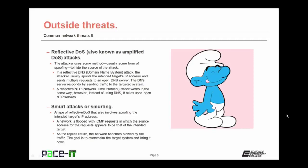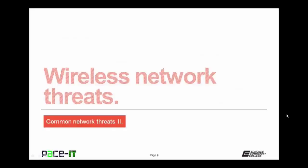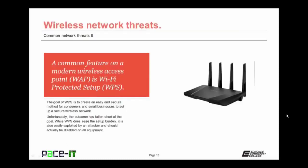It's time to move on to wireless network threats. A common feature on modern wireless access points is Wi-Fi Protected Setup, or WPS. The goal of WPS is to create an easy and secure method for consumers and small businesses to set up a secure wireless network. Unfortunately, the outcome has fallen short of the goal. While WPS does ease the setup burden, it is also easily exploited by an attacker and should actually be disabled on all equipment. This exploit has been known for a couple of years, and you would think that equipment manufacturers would quit enabling WPS by default on their equipment, but that's not the case.